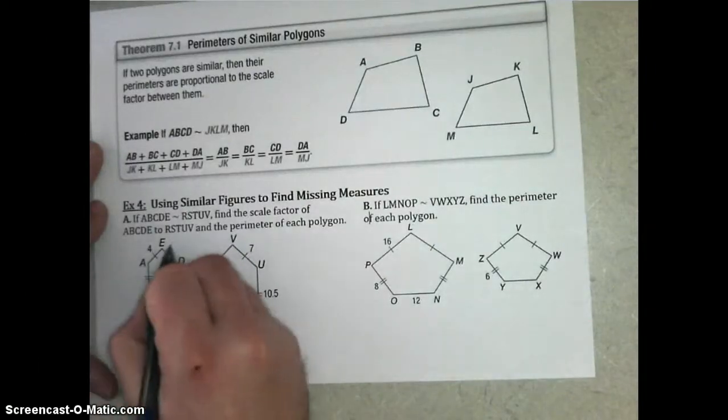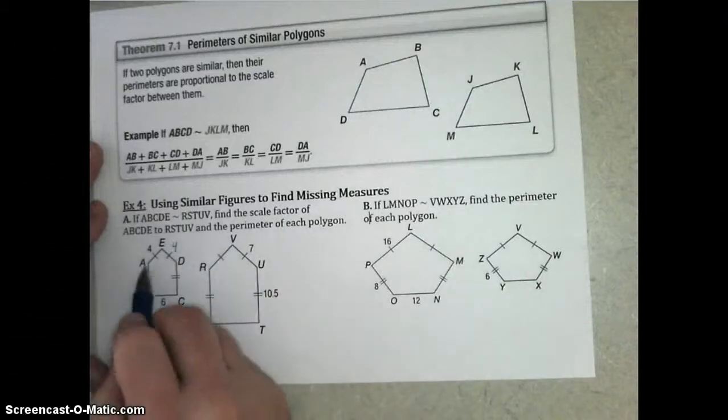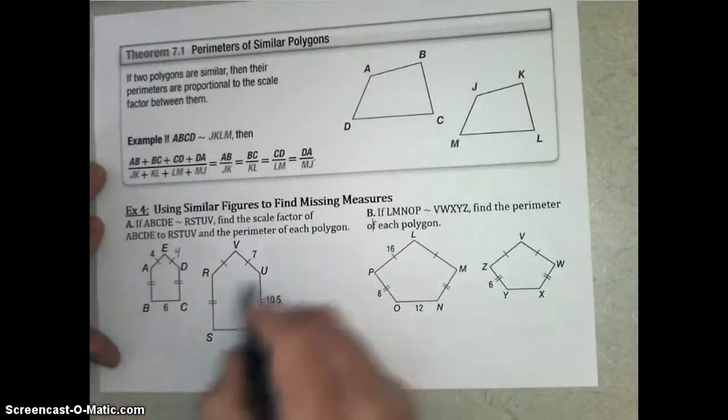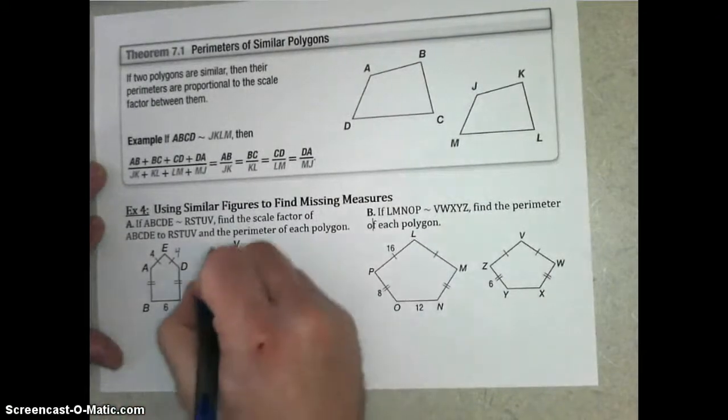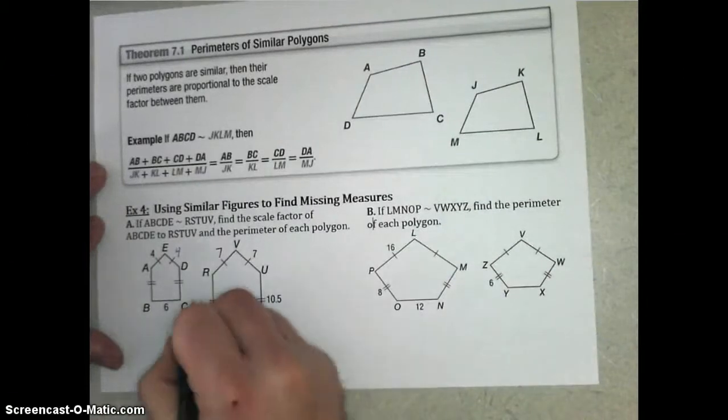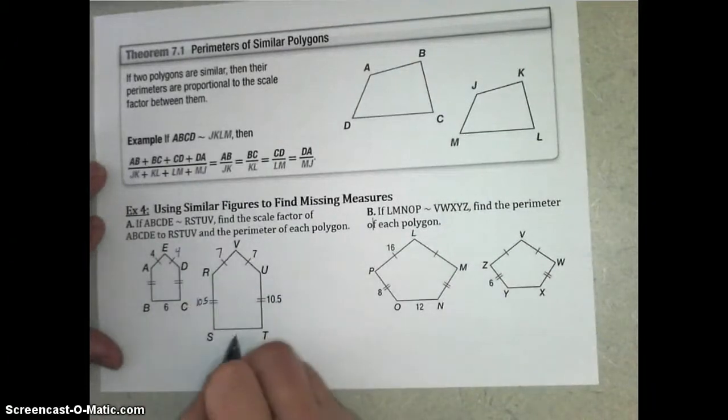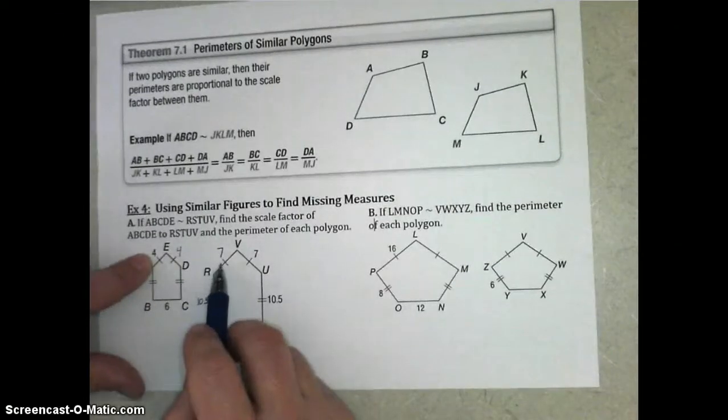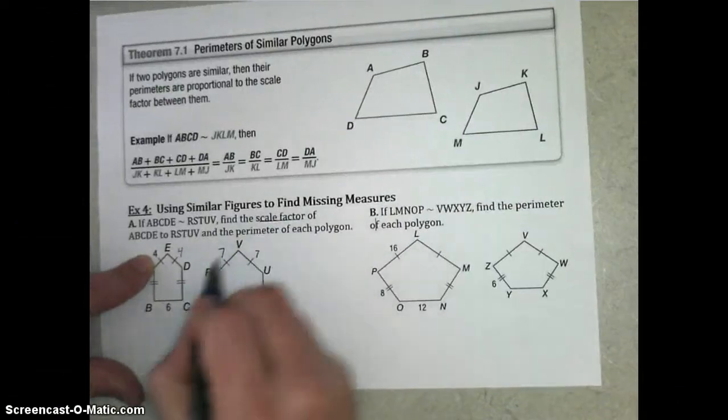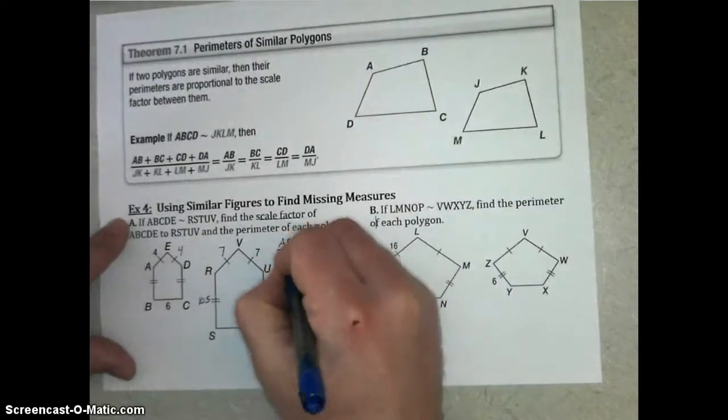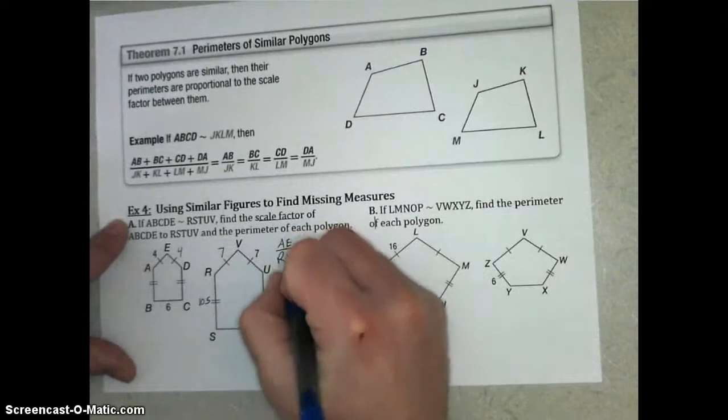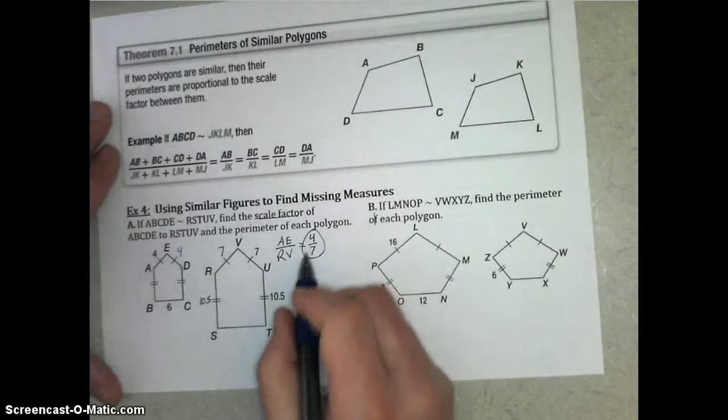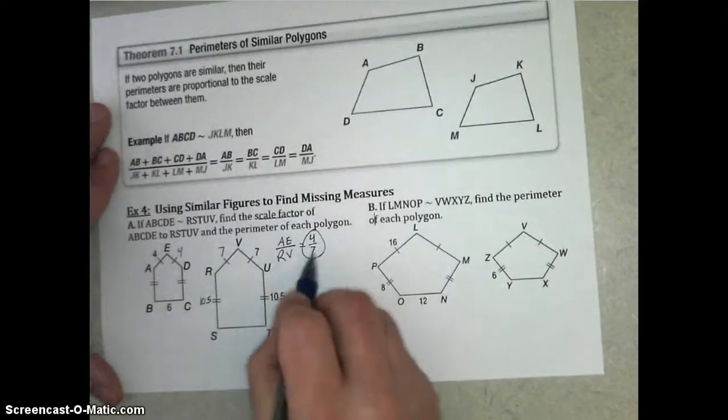If this is 4, the congruent segment over here is also 4, and this is 6. Now, I don't know what AD, or AB, and DC are, but I do know that they are the same measurements, and these are similar. Now, since I have these other measurements like 7 here and these being congruent as 10.5, even though I don't know TS, I can find these using my proportionality. So, I'm going to use the given sides to come up with that similarity ratio or scale factor. The scale factor would be whatever AE to its corresponding RV side would be. In that case, it's 4 to 7. So, that's our scale factor. The perimeter factor would be the same thing. So, we can use this to find the missing measures.